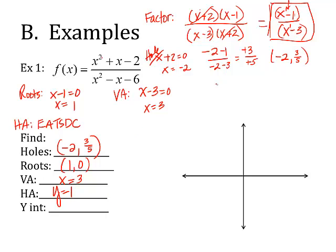And then the y-intercept. I take the reduced equation and put in 0s everywhere there's an x. So 0 minus 1 over 0 minus 3. That gives me negative 1 over negative 3, which is positive 1 third. So my y-intercept is at 0, 1 third.